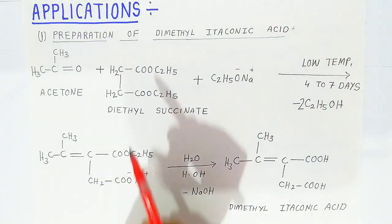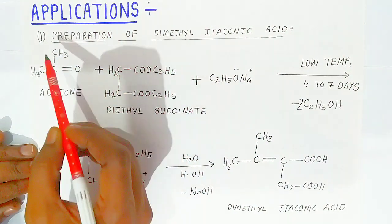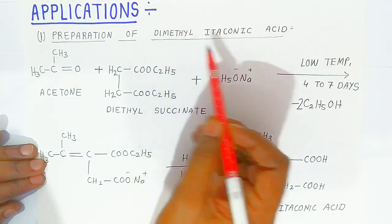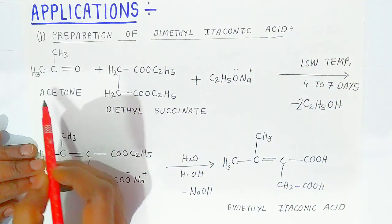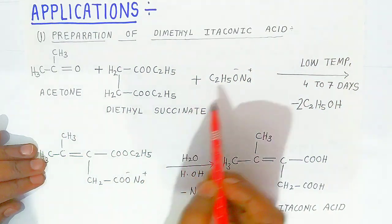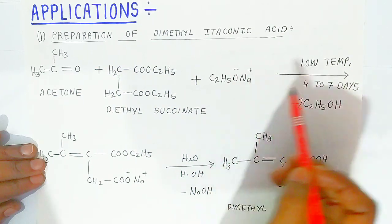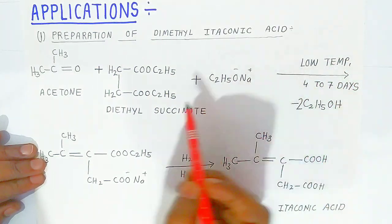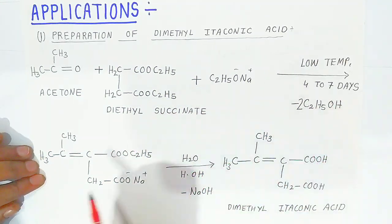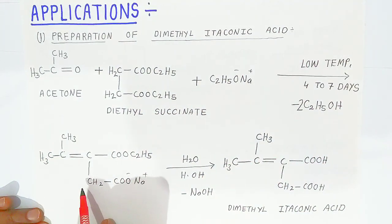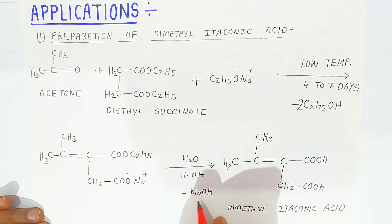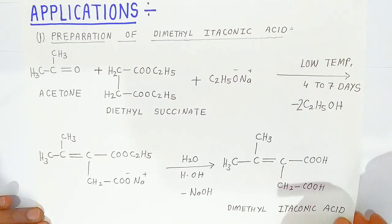Now we are going to see the applications of this reaction. The first application is the preparation of dimethyl itaconic acid. Acetone combines with diethyl succinate in presence of sodium ethoxide as a base at low temperature of 10 degrees Celsius. The reaction takes 4 to 7 days with elimination of ethanol, forming the sodium salt of the unsaturated compound. Upon acid hydrolysis, dimethyl itaconic acid is formed.